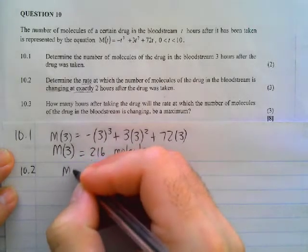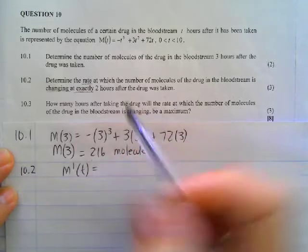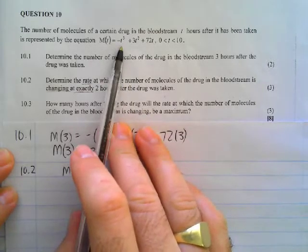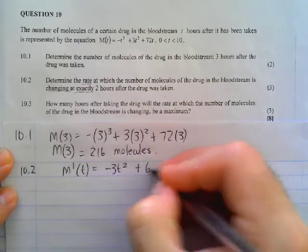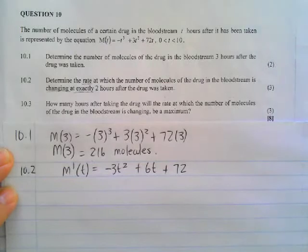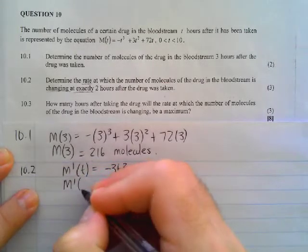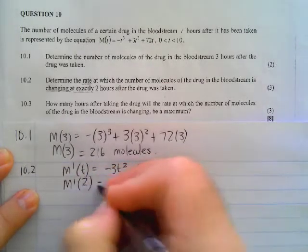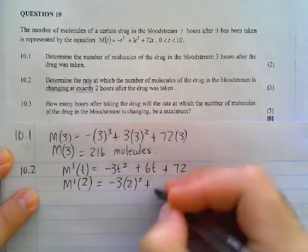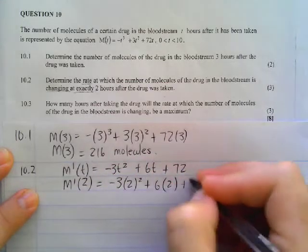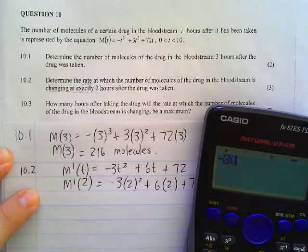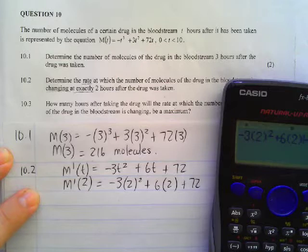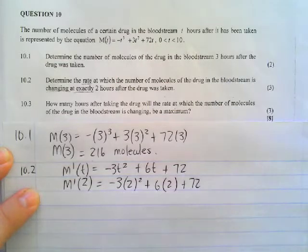We're going to find the first derivative and substitute 2 in place of the variable. The first derivative M'(T) is going to be equal to -3T² + 6T + 72. Now if they want the rate at exactly 2 hours, we're going to substitute 2 into our first derivative wherever we see a T. So -3(2)² + 6(2) + 72, and our answer is going to be 72.